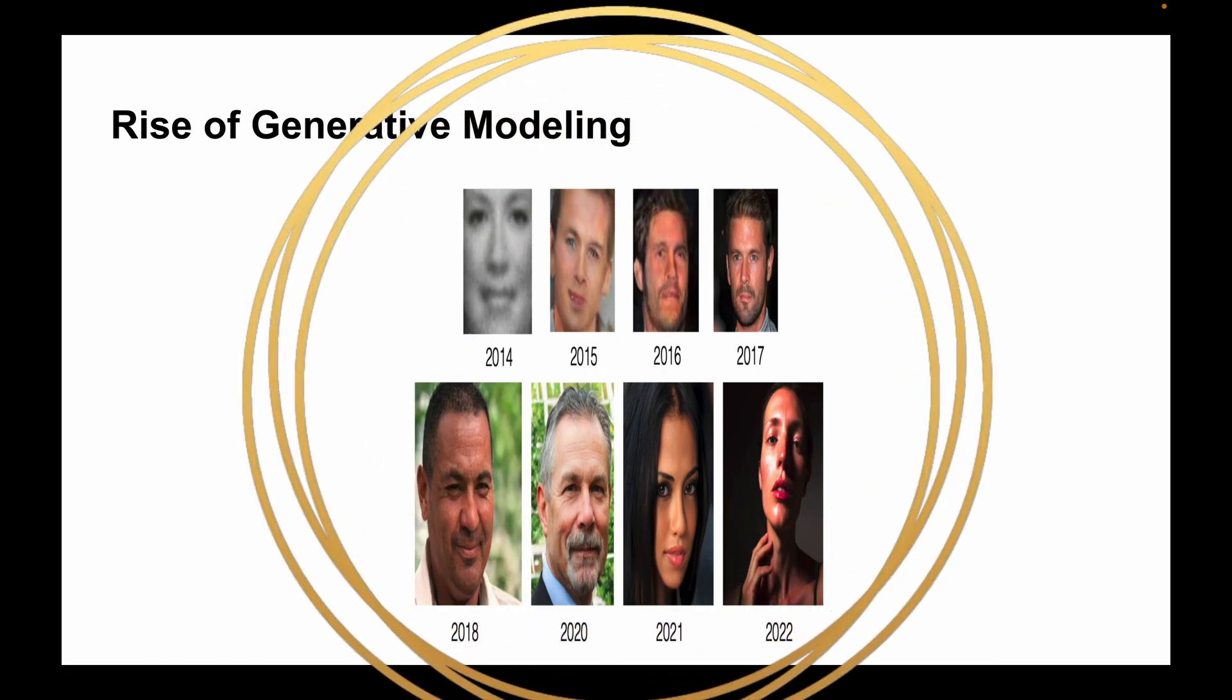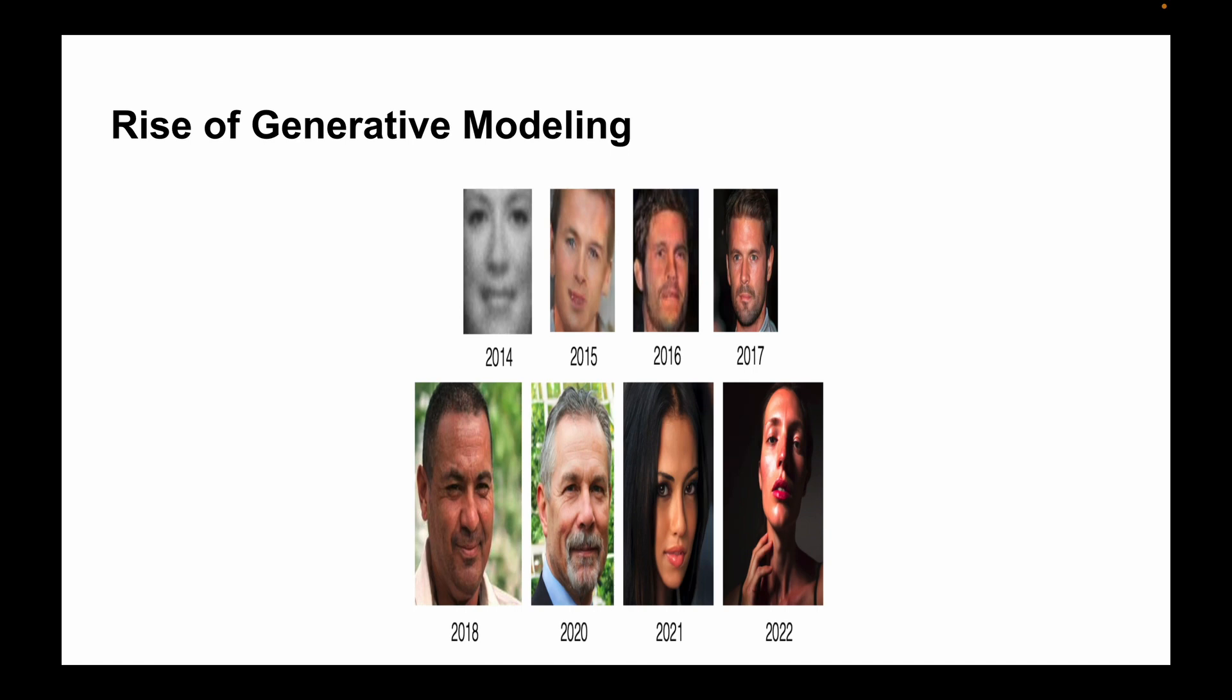To illustrate this, this particular diagram that you are seeing on the screen marks the impressive improvements in creating realistic faces from 2014 until now. We can see that in 2014 the generated image is pretty blurry, and then the advancements can be seen till 2022. You can't actually predict whether this is generated by an AI system or it is an actual image.